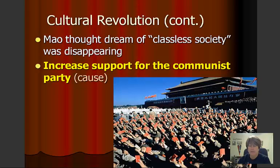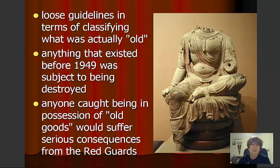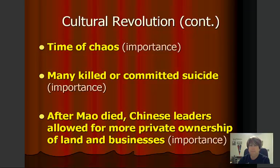Mao was worried about his classless society disappearing, and trying to regain his power and increase support for the Communist Party was the cause of the Cultural Revolution. There were loose guidelines for determining what was considered 'old' — anything that existed before 1949 was subject to being destroyed. Anyone caught in possession of old goods, sacred texts, or religious writings would suffer serious consequences from the Red Guards. The Cultural Revolution was a time of great chaos; many people were killed or committed suicide.